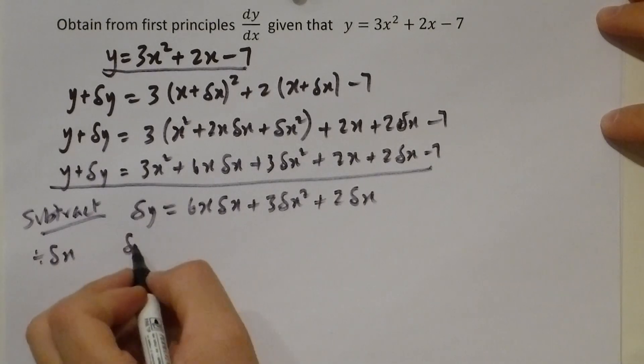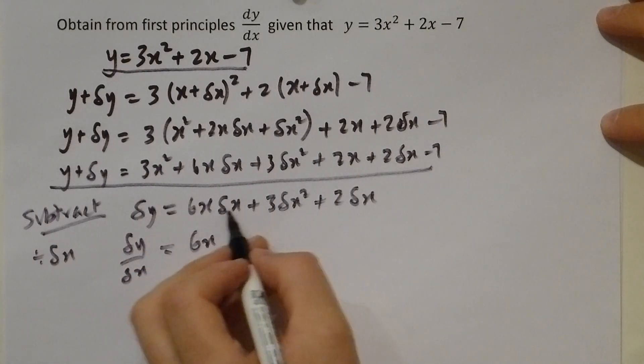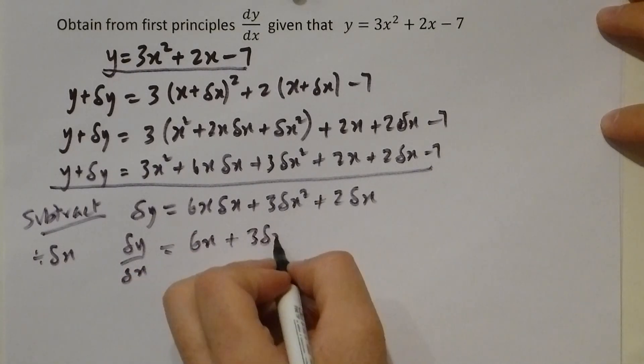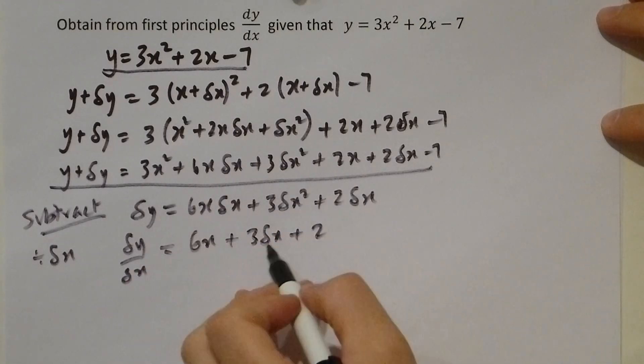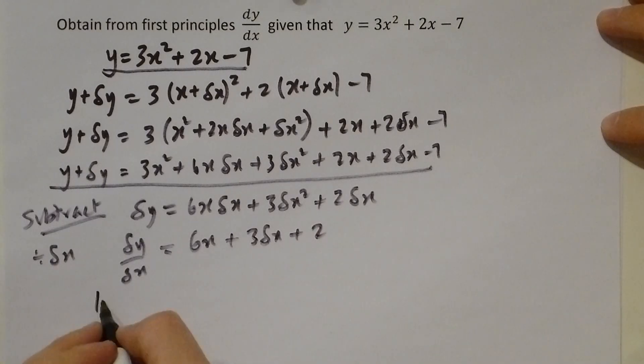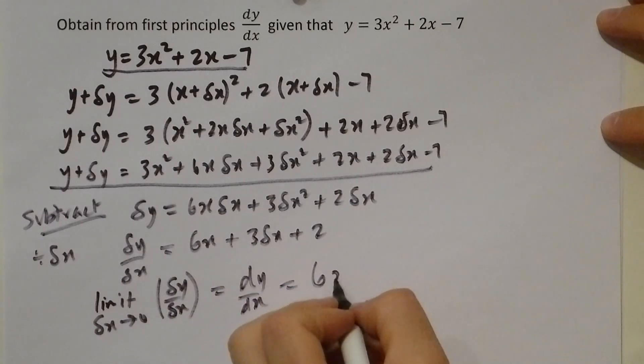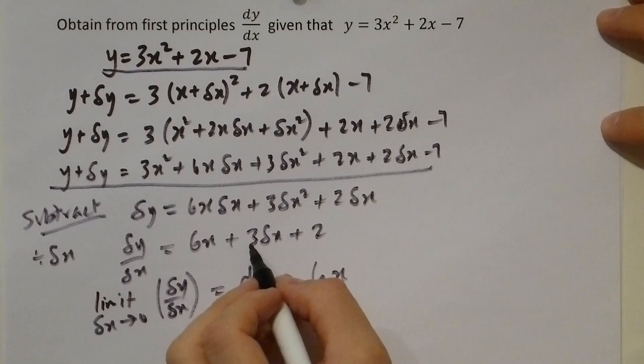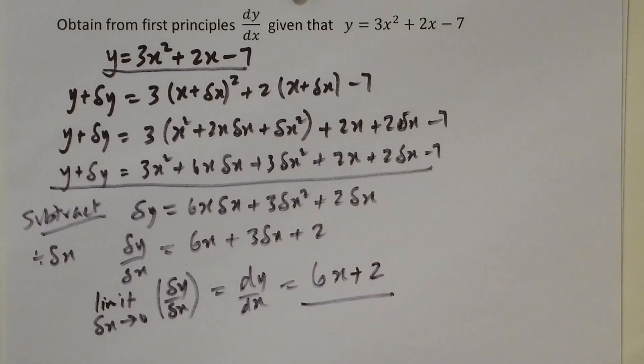Divide by delta x, which gives you our approximation for the gradient as 6x plus 3 delta x plus 2, because the delta x cancels. If we now limit delta x to zero on this approximation for the gradient, we get the true gradient dy/dx as 6x plus 2. And there we have differentiated from first principles.